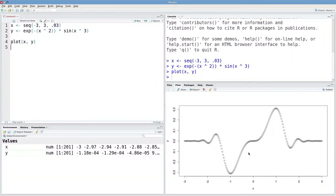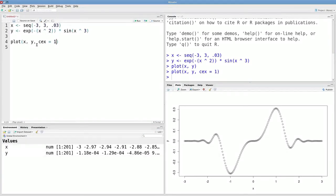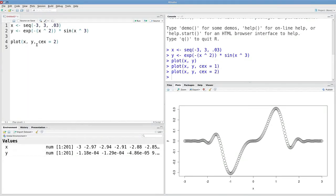Maybe we want to change the look of these points. For instance, we could make them larger with the CEX argument. CEX stands for Character Expansion Factor. It defaults to 1, so if we set it to 1 we'll get the same plot. If we set it to 2, now the points are twice as big.